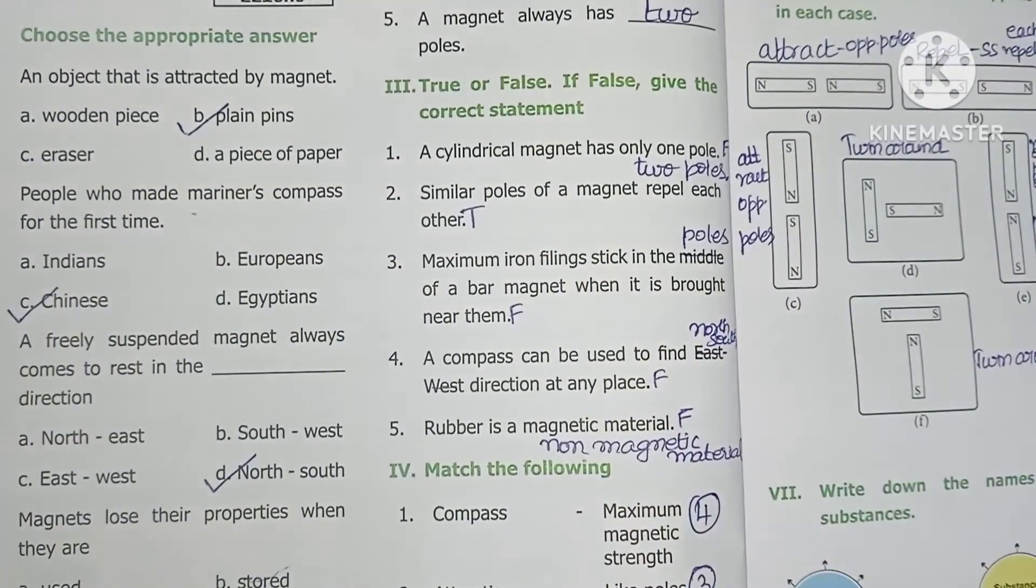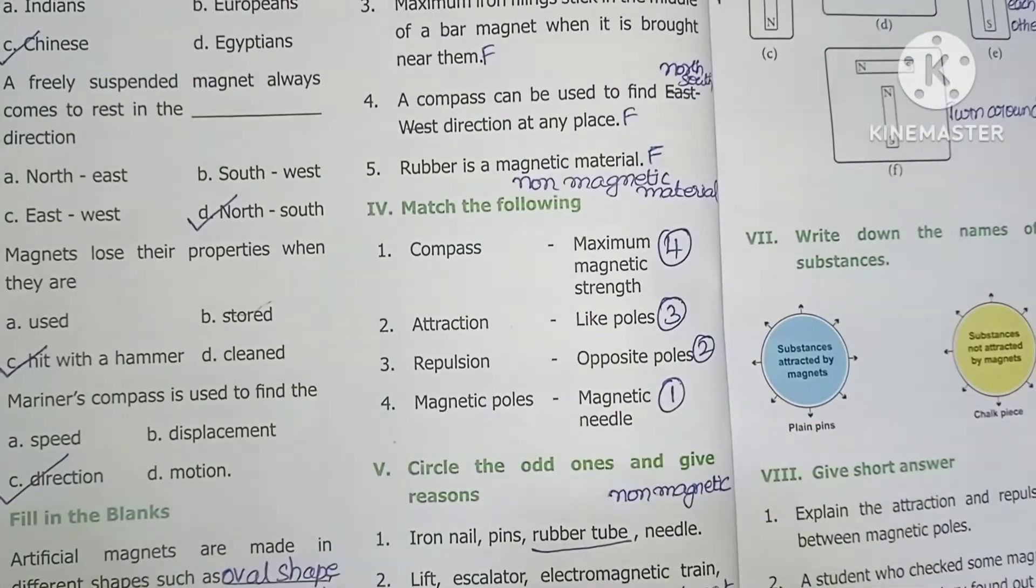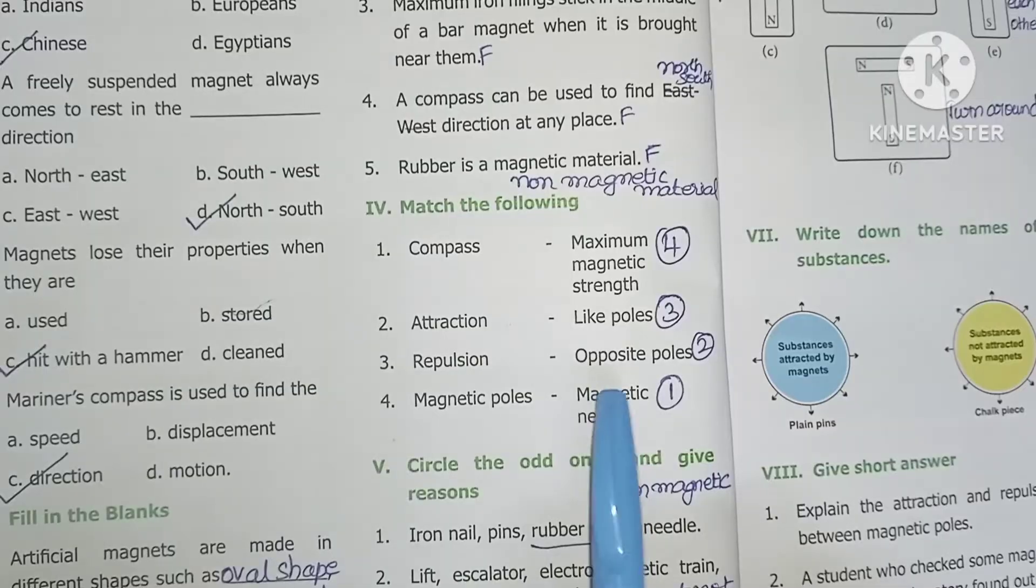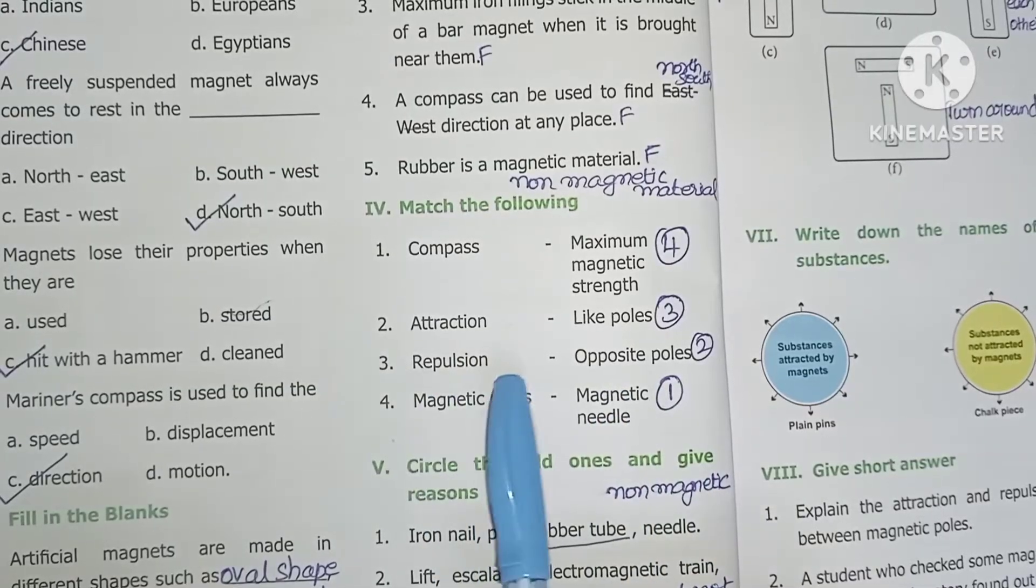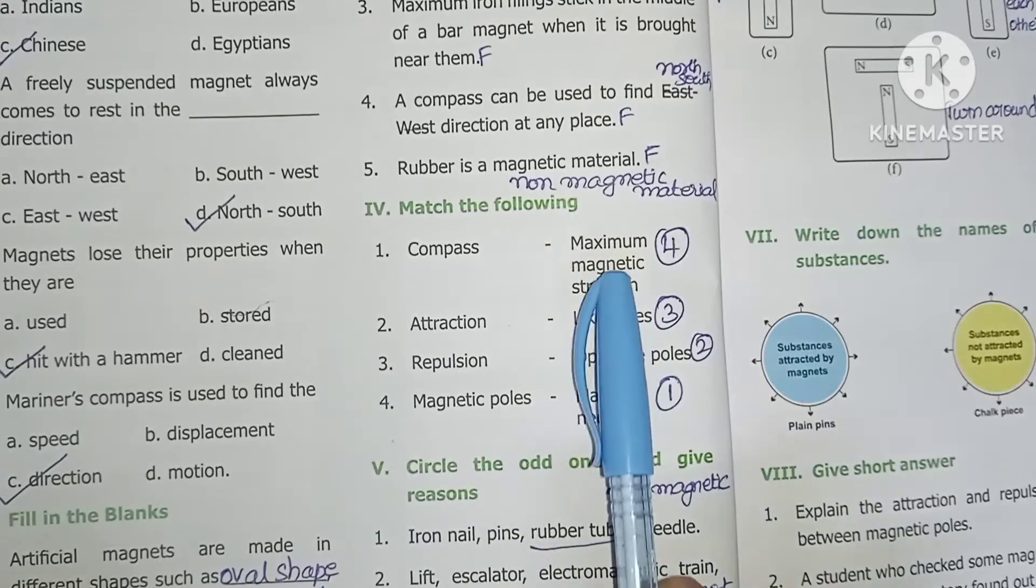Now, match the following. Compass - magnetic needle. Attraction - opposite poles. Repulsion - like poles. Magnetic poles - maximum magnetic strength.